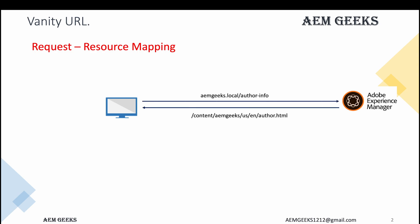Let's understand what we're going to achieve. Let's say I have a page called 'author' and I want to access that page using a specific shorthand URL called 'author-info' or any other name as per your need. We could use etc mappings but those are used for broader pages — more pages. Here we're talking about a particular page, so either we write an Apache rewrite rule or we achieve this at the AEM end using the vanity URL concept.